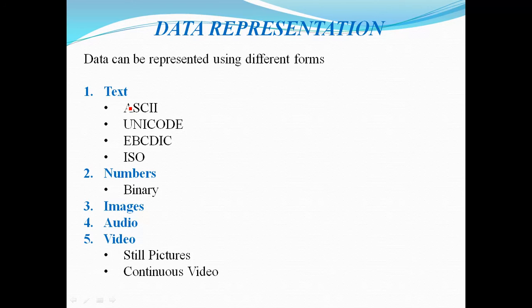Different types of text codes are ASCII code (American Standard Code for Information Interchange), Unicode, and EBCDIC (Extended Binary Coded Decimal Interchange Code).